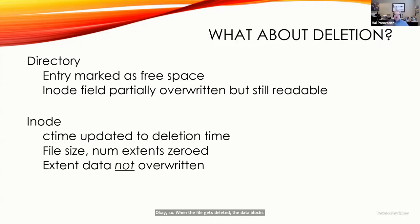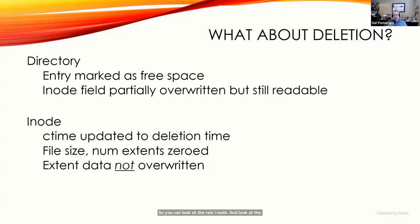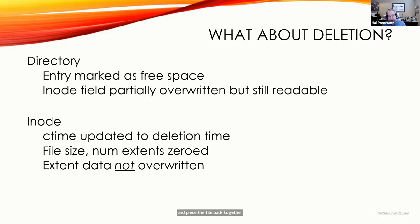When a file gets deleted, the data blocks get marked as unallocated and the inode gets some updates: timestamps are updated to show the deletion time, file size is marked as zero, and the number of extents is zeroed out. But interestingly, the space in the inode that actually holds the extent data is not overwritten. So you can look at the raw inode and see the extent data showing where the file used to be on disk.